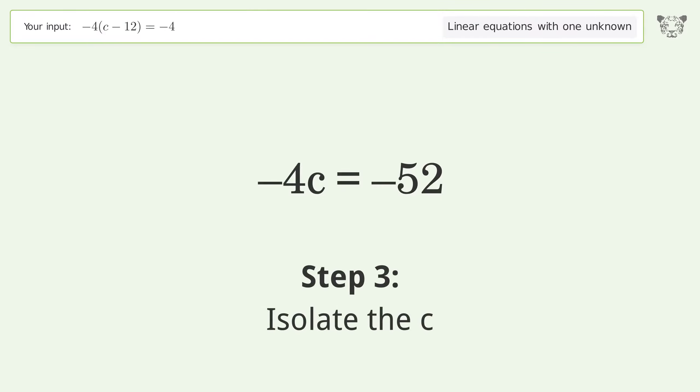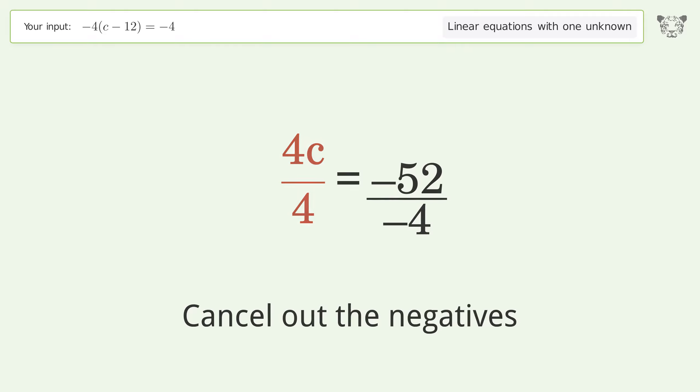Isolate the c. Divide both sides by negative 4. Cancel out the negatives. Simplify the fraction.